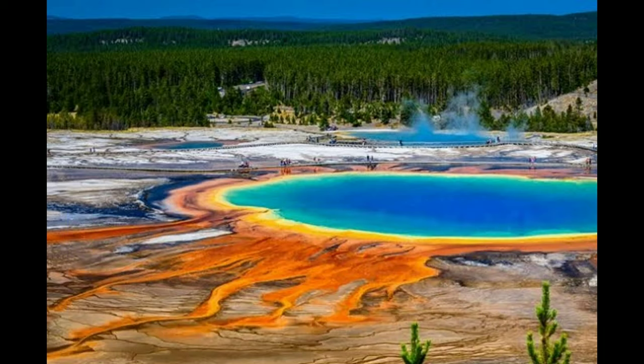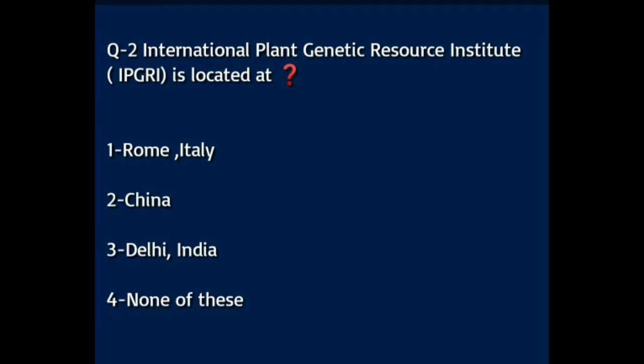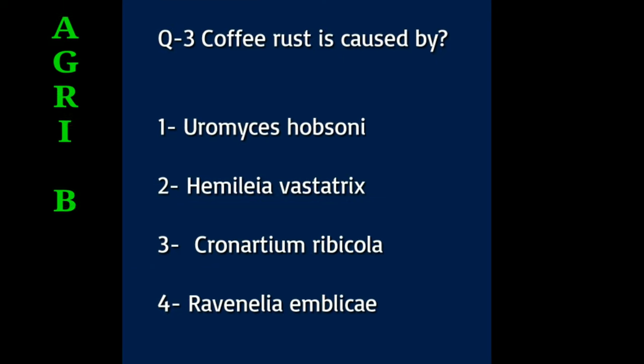Question number two: International Plant Genetic Resource Institute (IPGRI) is located at — Option A: Rome, Italy. Option B: China. Option C: Delhi, India. Option D: none of these. The answer to this question is Rome, Italy.